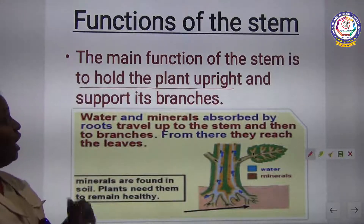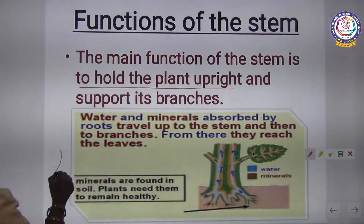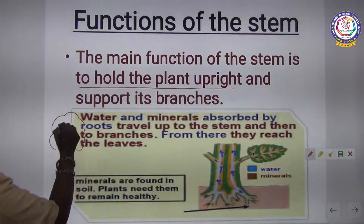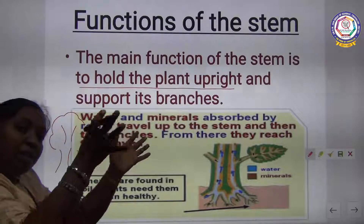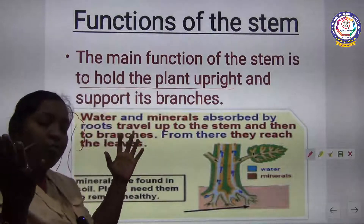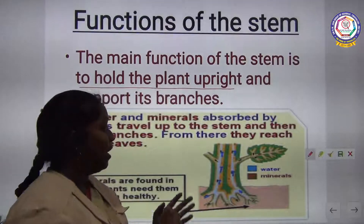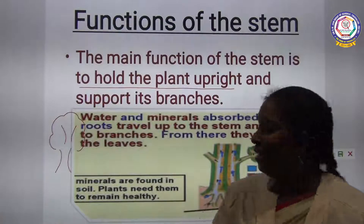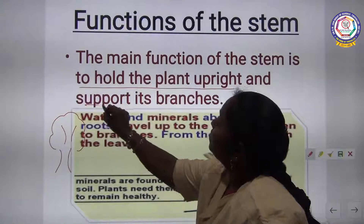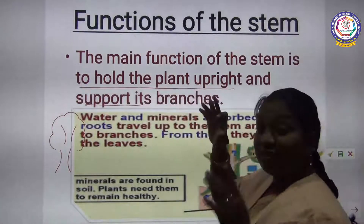The stem holds the plant upright and gives support to the branches. If you look at a tree, you can see many branches — more than just one or two. All of these are held and supported by the stem.